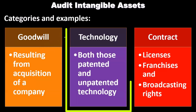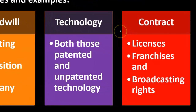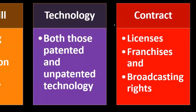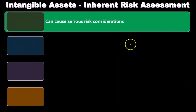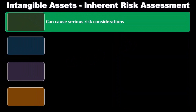Technology-related intangibles include both patented and unpatented types of technologies. Then we have contracts, such as licenses, franchises, and broadcasting rights — another kind of intangible asset category.